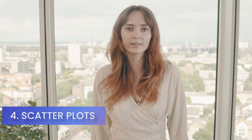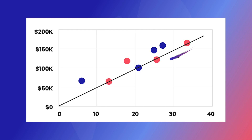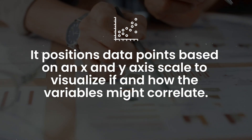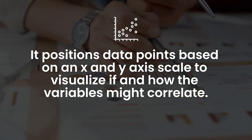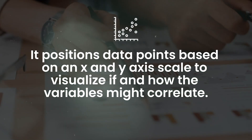Next up we have scatter plots. A scatter plot is a type of mathematical chart that shows the relationship between two variables on a graph. It positions data points based on an x and y axis scale to visualize if and how the variables might correlate. In finance, you can use this type of visual to compare two metrics like recurring revenue and sales expenses. After plotting out some data points, you can observe if costs rise in correlation with the revenue gains.